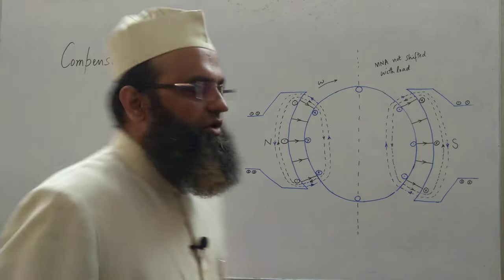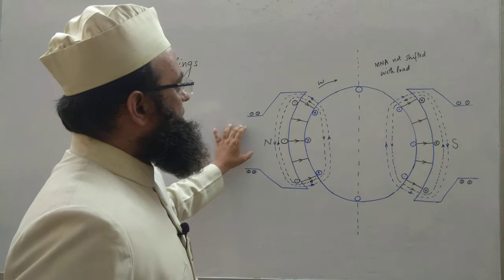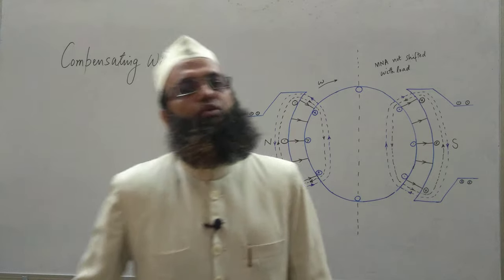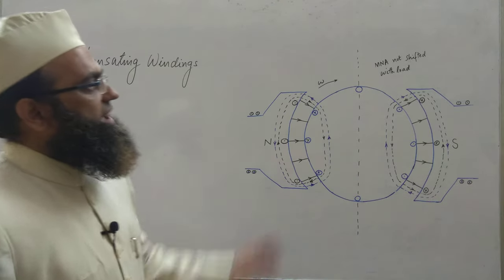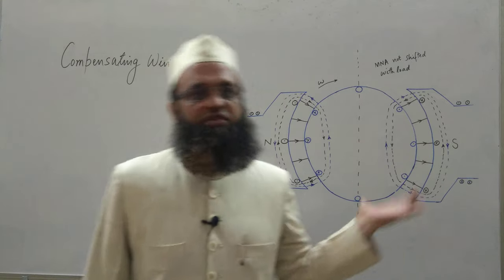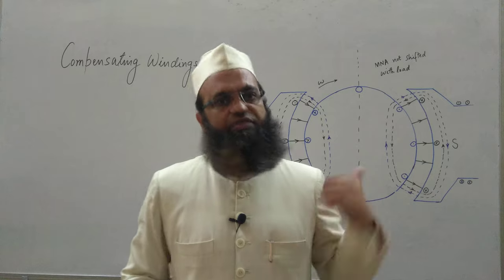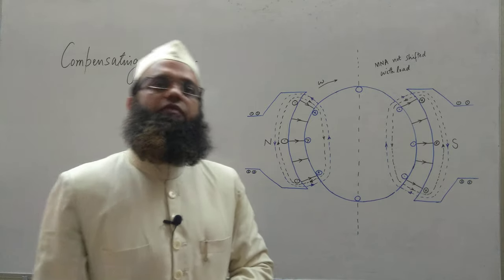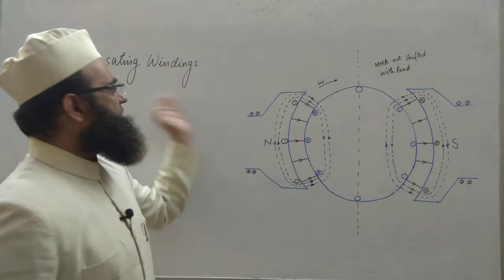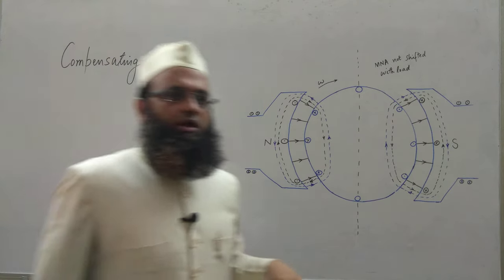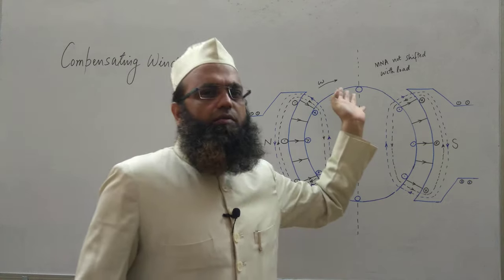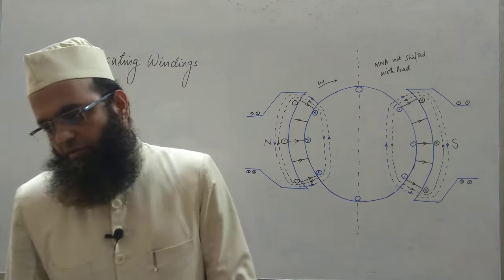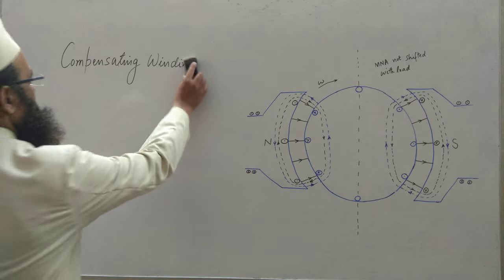Hence, machines using compensating windings are required to use interpoles also. But this time the burden on the interpole will be reduced. Earlier, the interpole had to take care of two types of induced voltages: one due to MNA shift and the other due to the inductive voltage kick. But now the interpole only has to take care of the L·dI/dt voltage, because the MNA shift voltage problem has been solved by the compensating winding. Hence the size of the interpole will be smaller and the number of turns will be fewer than in the previous case.